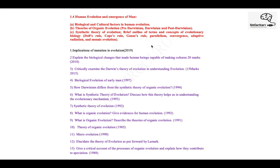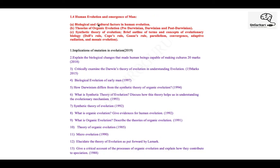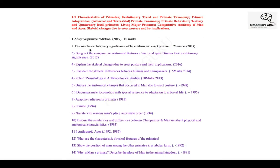Unit 1.5 covers characteristics of primates — taxonomy, adaptations, fossil primates, living major primates, and adaptive primate radiation. The question on the evolutionary significance of bipedalism and erect posture can be linked to this part and also to biological-cultural factors in human evolution. What did bipedalism do? It led to cultures being developed, and it also produced biological changes — this is a very important topic that will repeat.